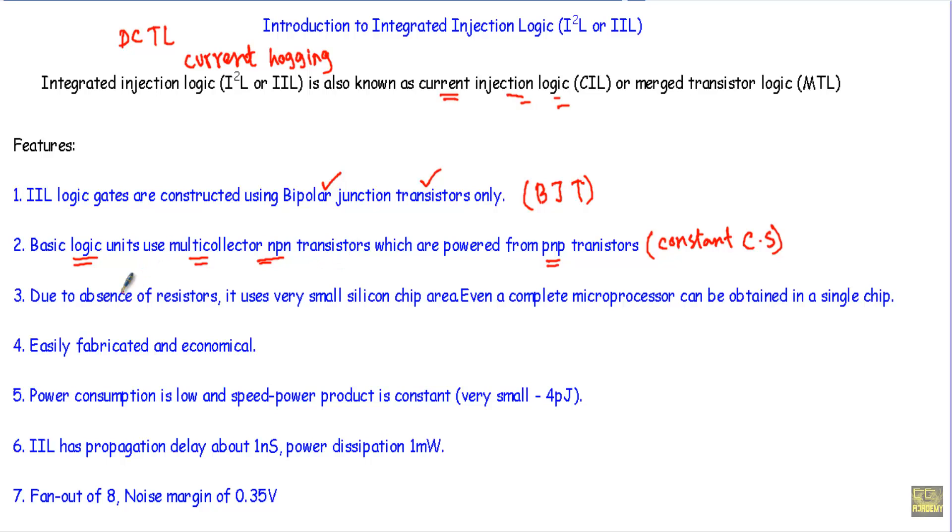And as the circuit uses only Bipolar Junction Transistors, it will not use any resistors. Therefore, it will require very small silicon chip area. Due to the small silicon chip area, even a complete microprocessor can be fabricated in a single chip.